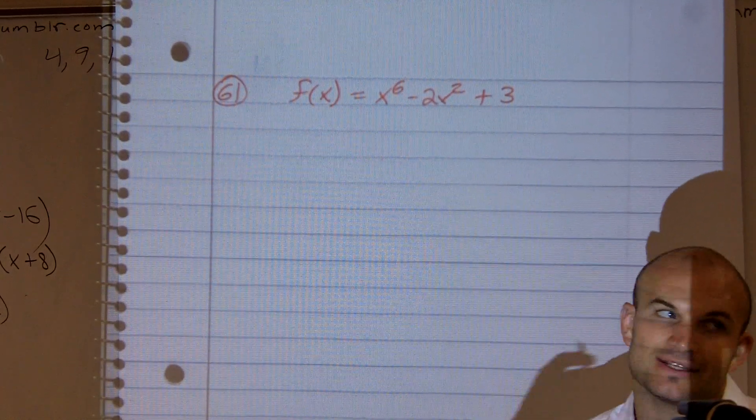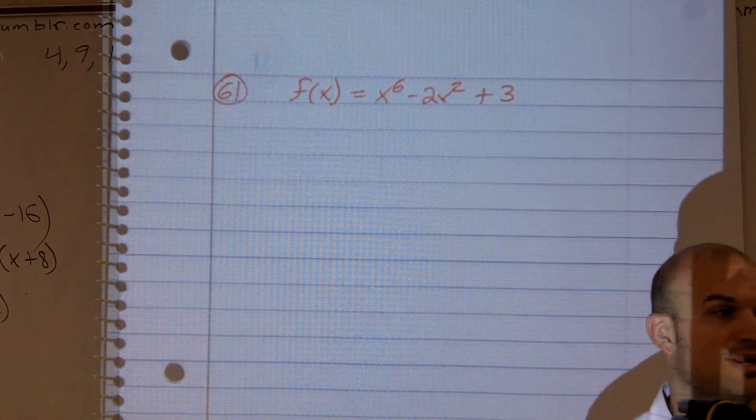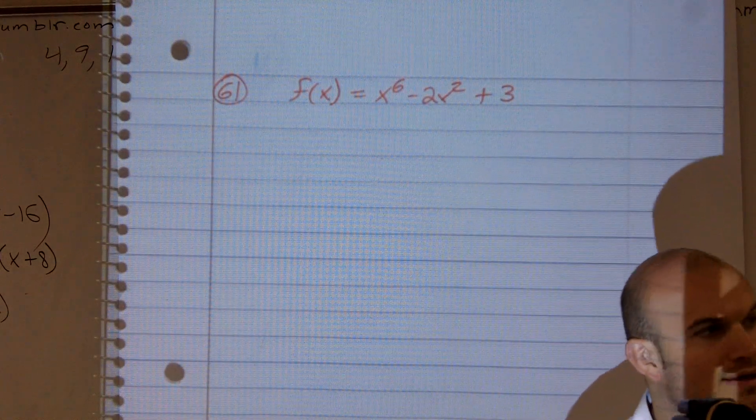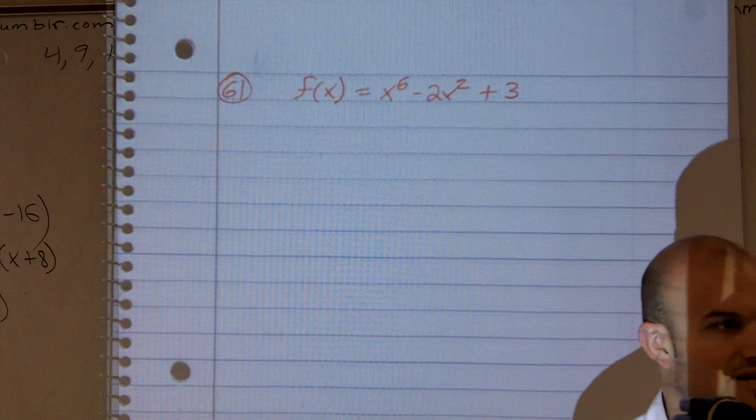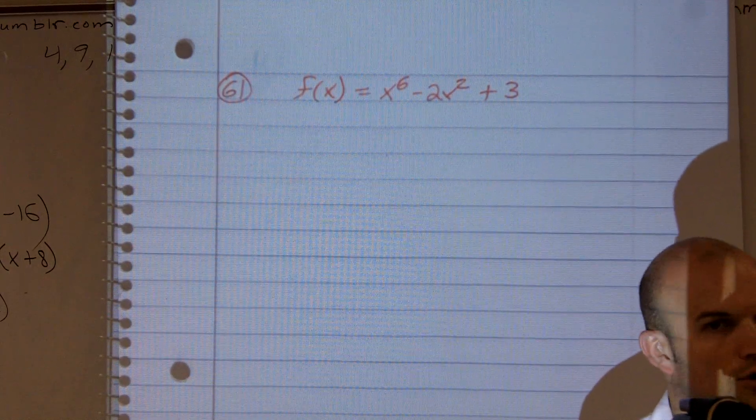Now when I talked about your guys' outlines, if we were going to look at the graph of this, you guys should have written down in your 1.4 outline that if it's even, it's symmetrical with the y-axis, and if it's odd, it's symmetrical with the origin.